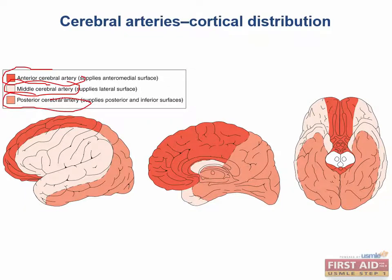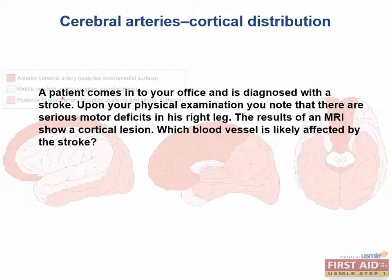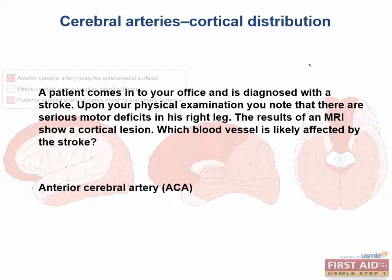For example, a patient comes into your office and is diagnosed with a stroke. Upon your physical examination, you note that there are serious motor and sensory deficits in his right leg. The results of an MRI show a cortical lesion. Which blood vessel is likely affected by the stroke? The answer here would be the anterior cerebral artery, or ACA. The fact that the question tells you it's a cortical lesion means that you should be thinking about these three major cortical blood suppliers.